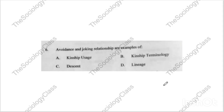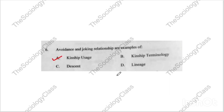Question number six: 'Avoidance and joking relationships are examples of what?' The options are kinship usage, kinship terminology, descent or lineage. The correct answer is A — kinship usage.